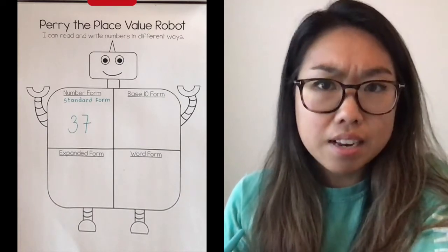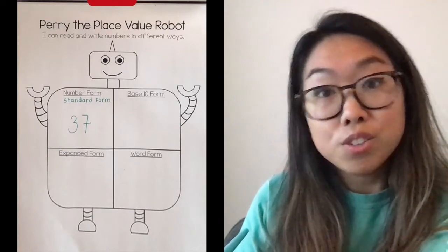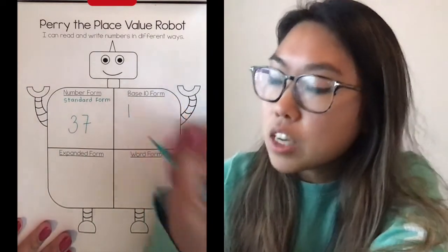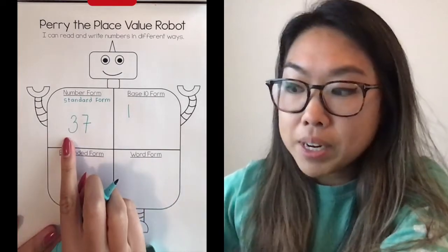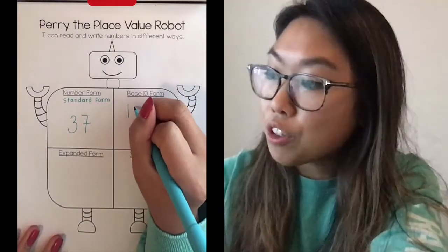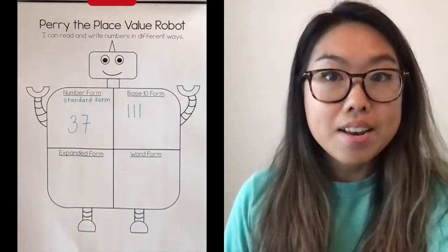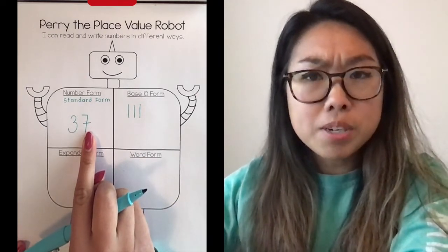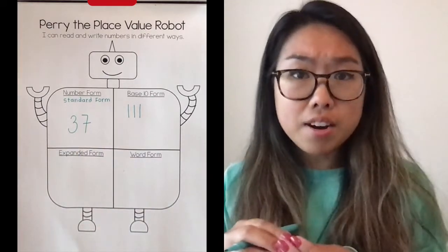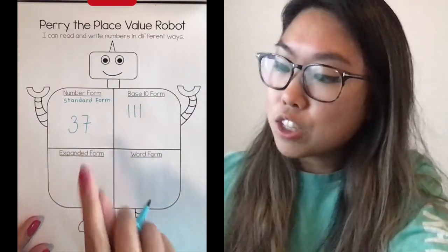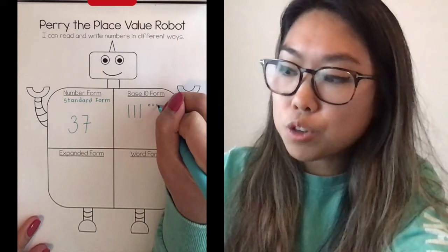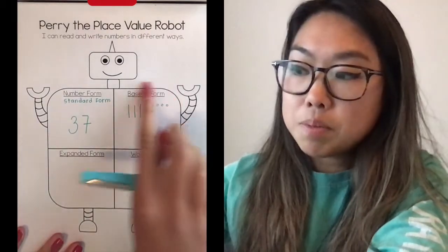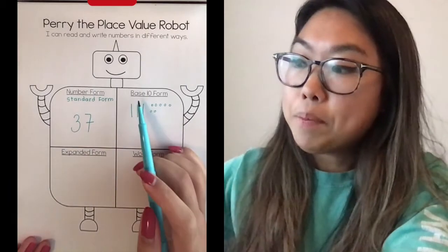When I think about base 10 form, I'm thinking about my blocks. When we think about drawing base 10, we think: what does a 10 rod look like? For us, it looks like a line, and that line is going to represent one 10. How many 10s do I have? I have three 10s, so I need to draw three 10 rods. Then I think about my ones place — I see seven ones. I'm going to represent those by drawing circles, and I like to keep my circles organized in groups of five. Because I drew them as base 10 drawings, that is called base 10 form.